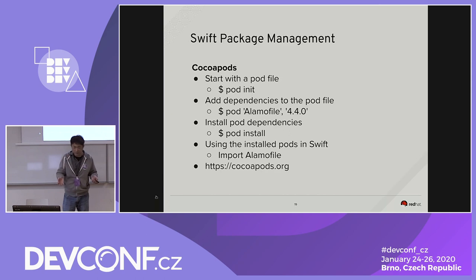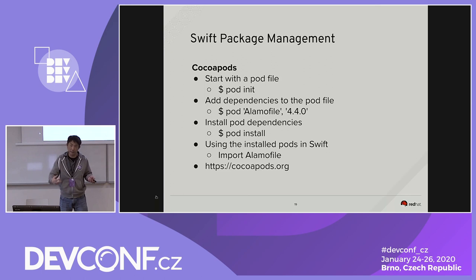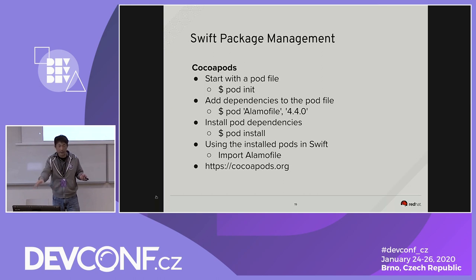To use CocoaPods, it's very straightforward. You start with a pod file and do pod init, then add the dependency — in this case, Alamofire, which is a dependency for making network calls. If you need to make an HTTP call using Alamofire, you add the pod name and a version number. After your pod file is updated, you call pod install, then go to your Swift class and do import Alamofire to start using the API and libraries.